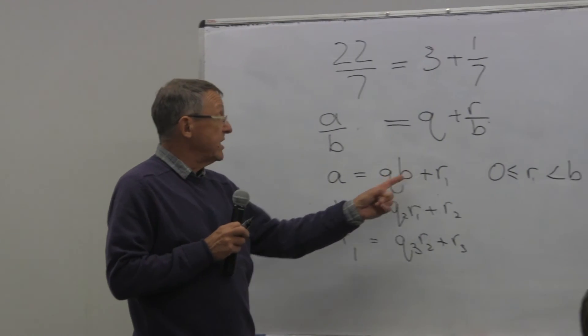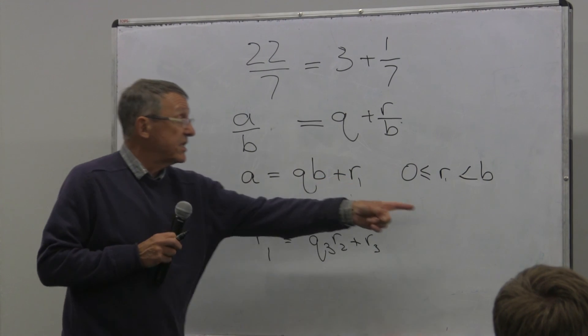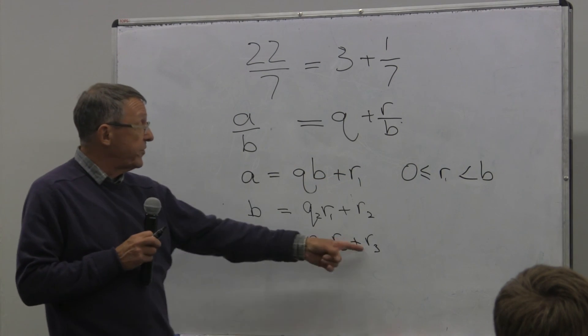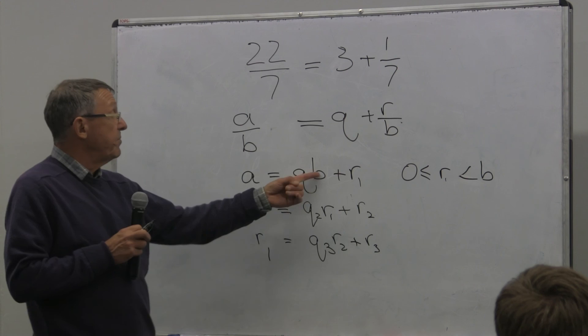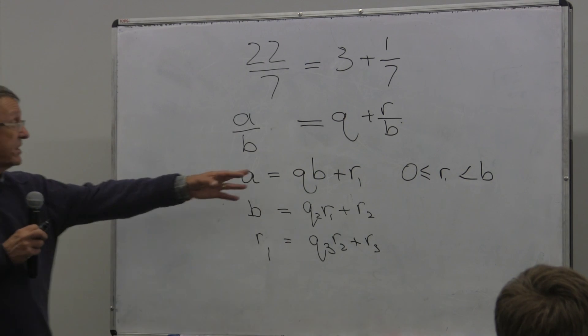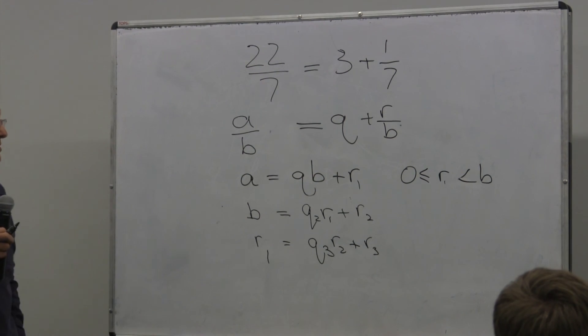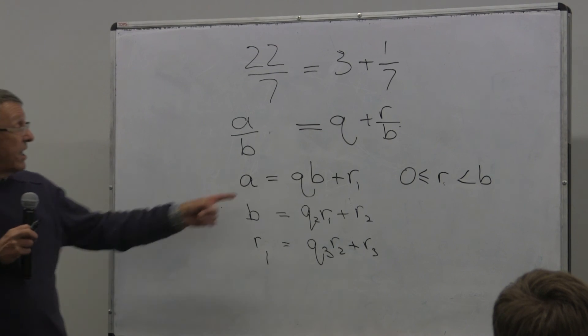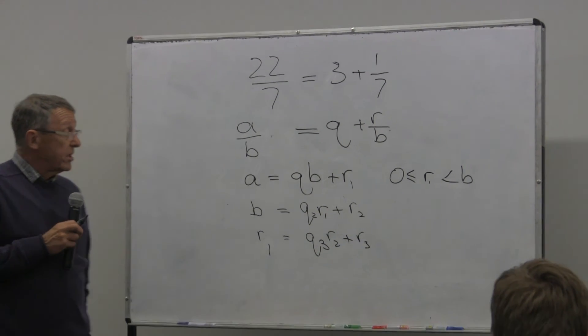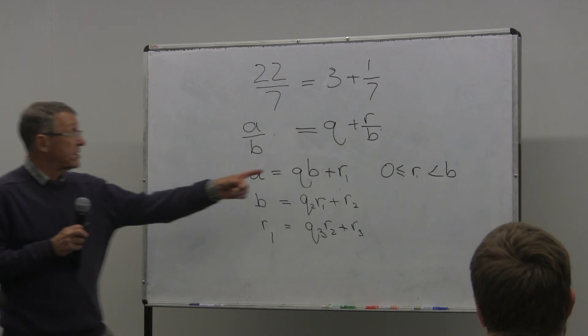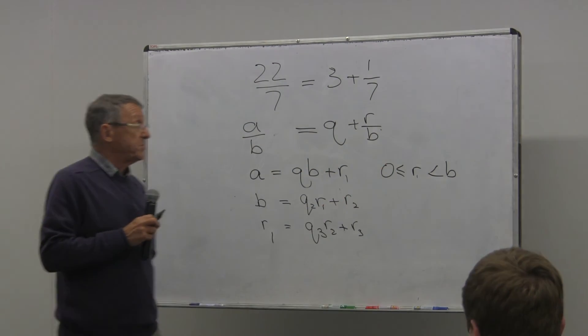And as long as the remainder is not 0, you can write an extra line. And you can continue in this way. But R1 is less than B, R2 is less than R1, R3 is less than R2. B, we've assumed, I haven't said it at the beginning, is a positive integer. This procedure can't go on forever because R1 was already squeezed, and R2 is less than R1.